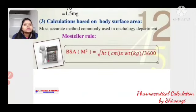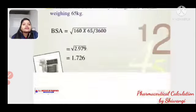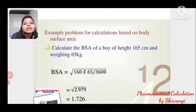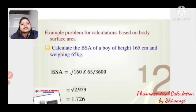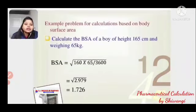Mosteller's Rule for Body Surface Area (BSA): BSA (m²) = √(Height in cm × Weight in kg / 3600). Example: Boy with height 165 cm and weight 65 kg. BSA = √(165 × 65 / 3600) = √2.979 = 1.726 m². Thank you, class.